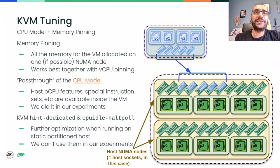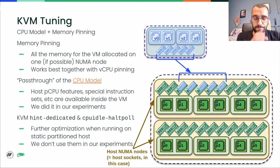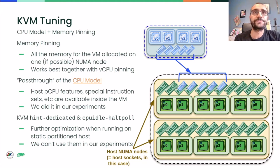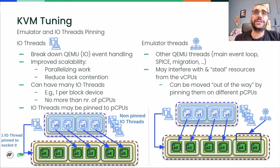If we are pinning vCPUs on the pCPUs of a specific NUMA node, it also makes sense to ensure that the VM's memory is entirely allocated on that same NUMA node, to avoid the latency of remote memory access. It is also possible to offload to QEMU the threads that deal with IO events, in an attempt to improve IO scalability and isolate the vCPU from interference of IO itself. We did some experiments with these settings, but will not go into detail for time reasons.